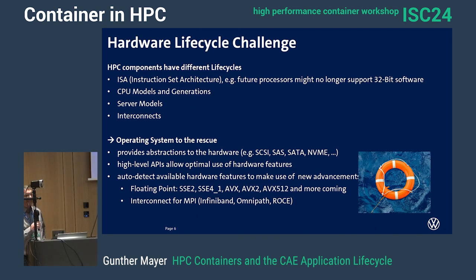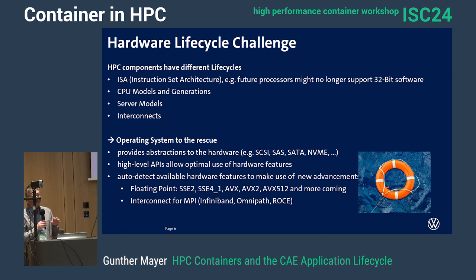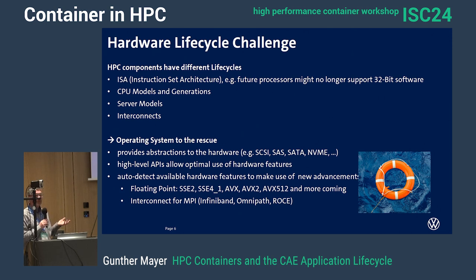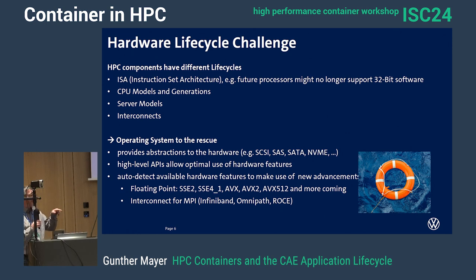Not only do we have these software updates, but the hardware lifecycle is also a challenge — CPU models, server generations. Newer servers are only certified for Red Hat 8 but no longer for Red Hat 7. The operating system provides abstraction from the hardware level, and high-level APIs allow optimal use of hardware features. For example, I liked the libfabric approach where you just swap the libfabric component and leave the MPI intact, because the MPI was certified by the software vendor and if you swap the MPI, all things might happen.